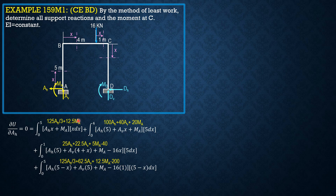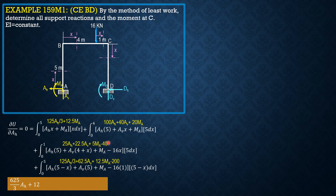Combining like terms and setting the constant to the right side gives the first equation: (625/3)Ah + 125Av + 50Ma = 240. This is Equation 1.